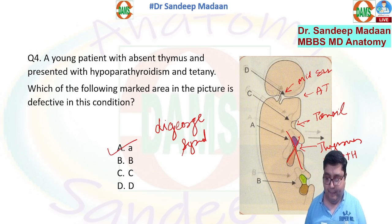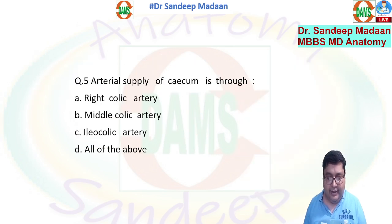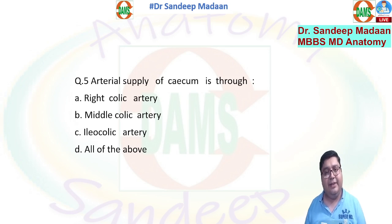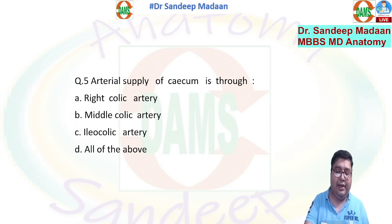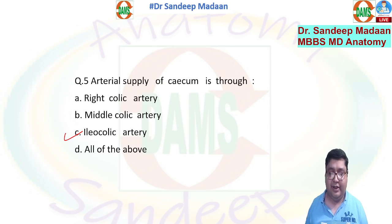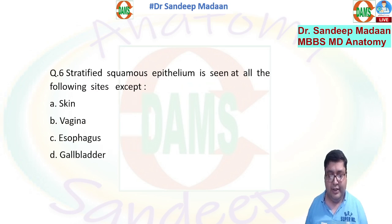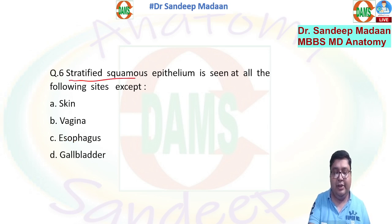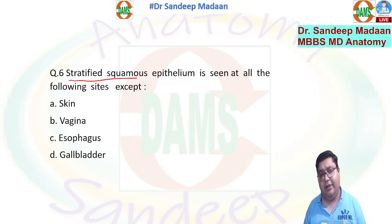The next question is: what is the arterial supply of the cecum? The cecum is supplied by the anterior cecal artery and posterior cecal artery, both of which are branches of the ileocolic artery. The appendicular artery is also a branch of the ileocolic artery.